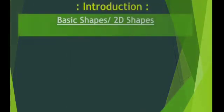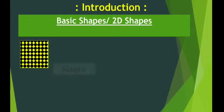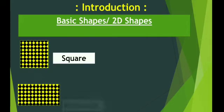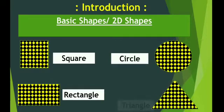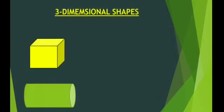Basic shapes: 2D shapes. Now this is a square, a rectangle, a circle, and a triangle. These are the four basic shapes. Now what are three-dimensional shapes?